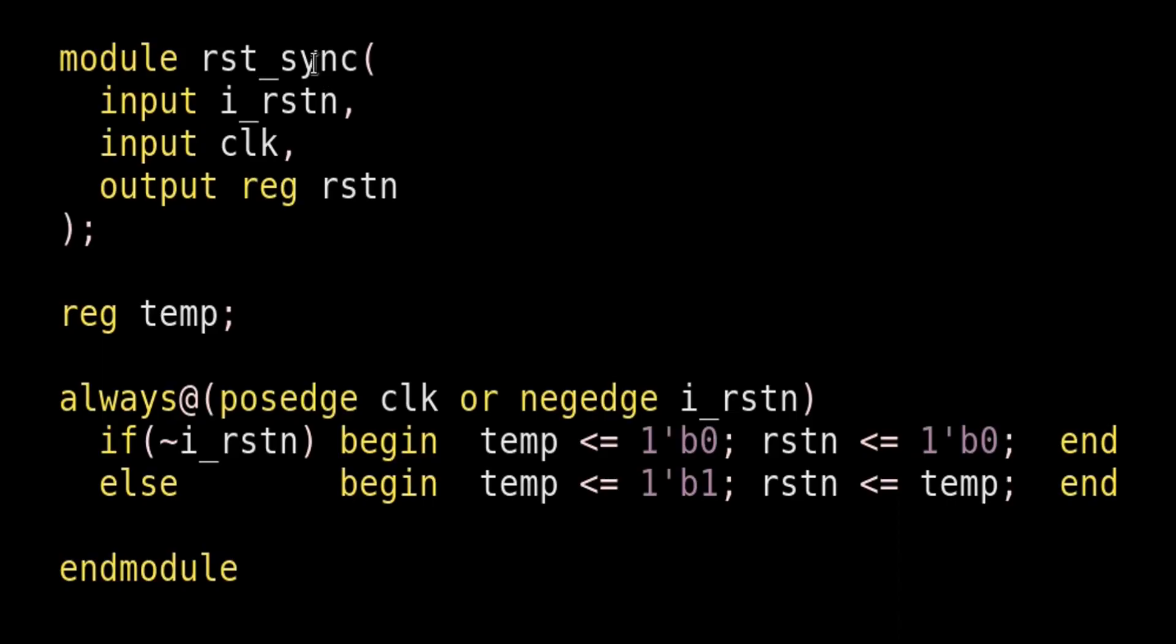On your screen, you are seeing a Verilog code of reset synchronizer. Module name is reset_sync. Input is i_rstn and clock. And output is rstn. These three variables are also shown in a diagram. I am declaring another variable temp and its RTL design is very simple.